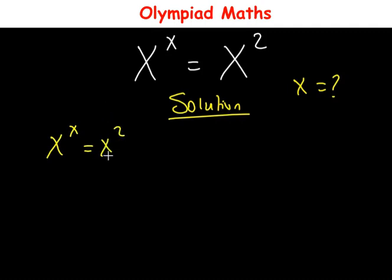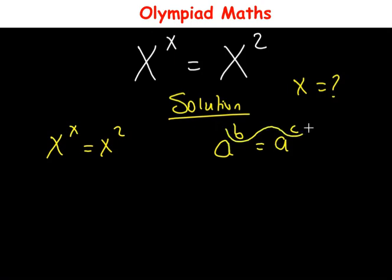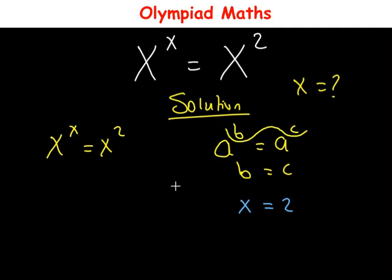By mere inspection, applying the rule that if a raised to power b equals a raised to power c and the bases are the same, we compare the exponents: b equals c. In this case we conclude that the value of x is equal to 2 by comparing the exponents. This is one solution, but there are other solutions for x.